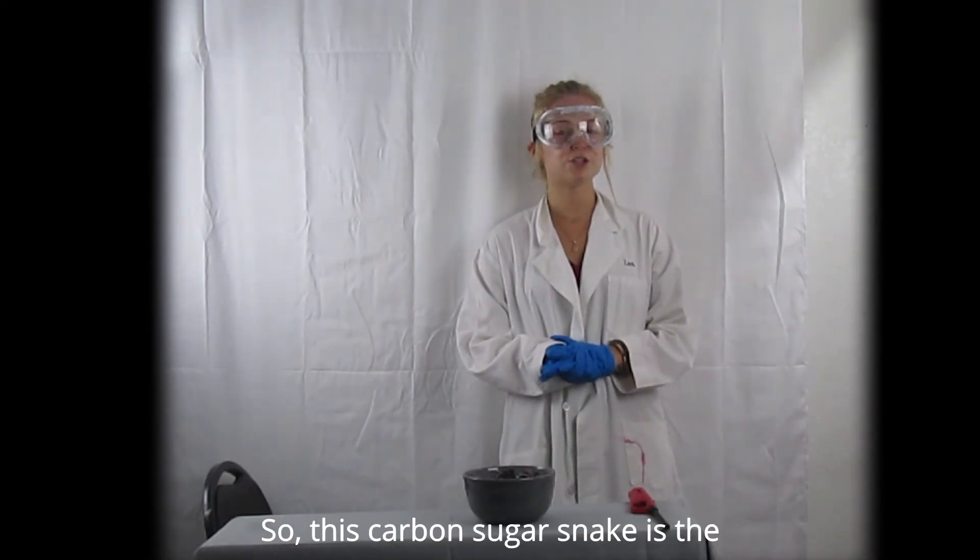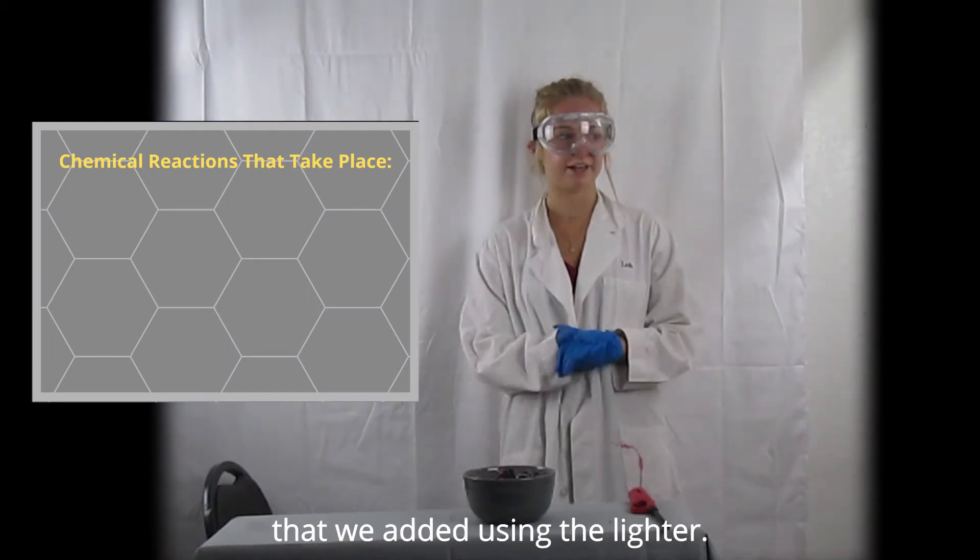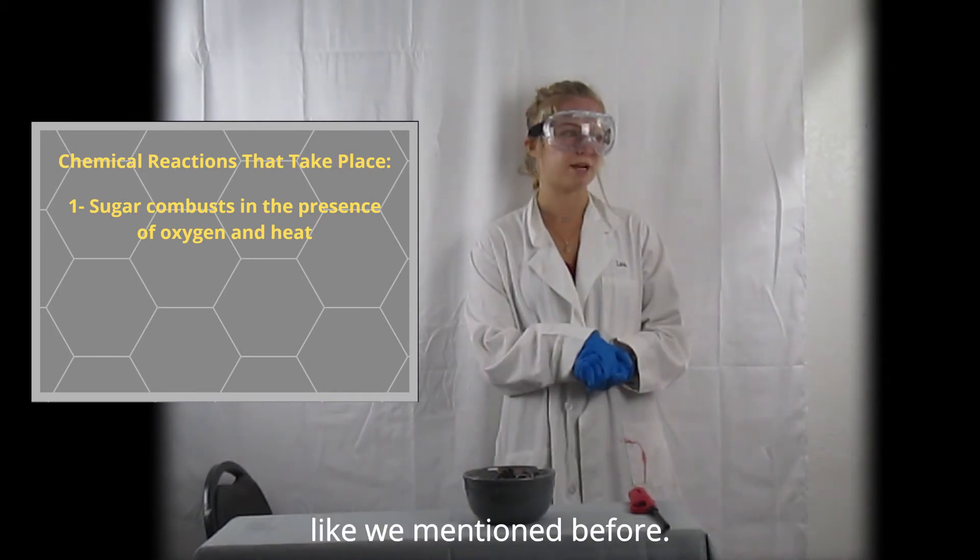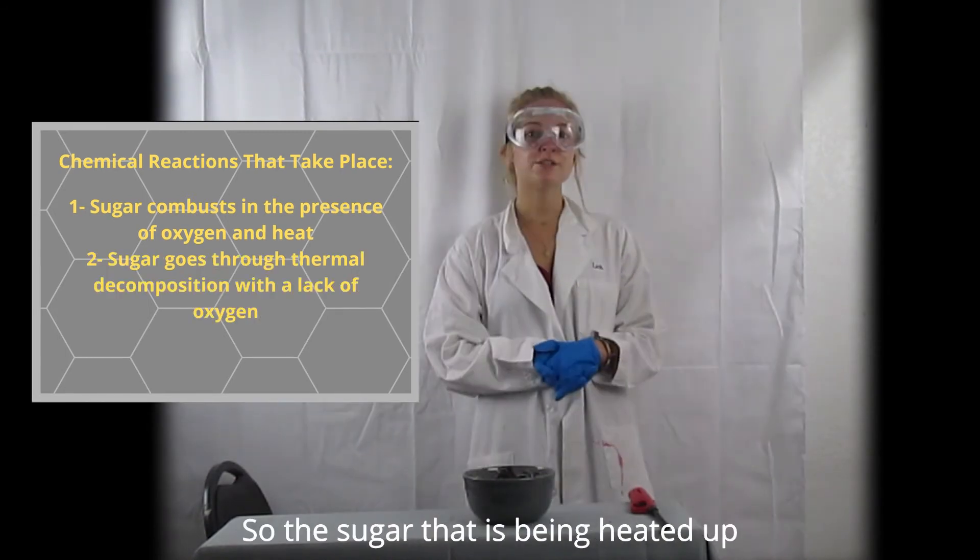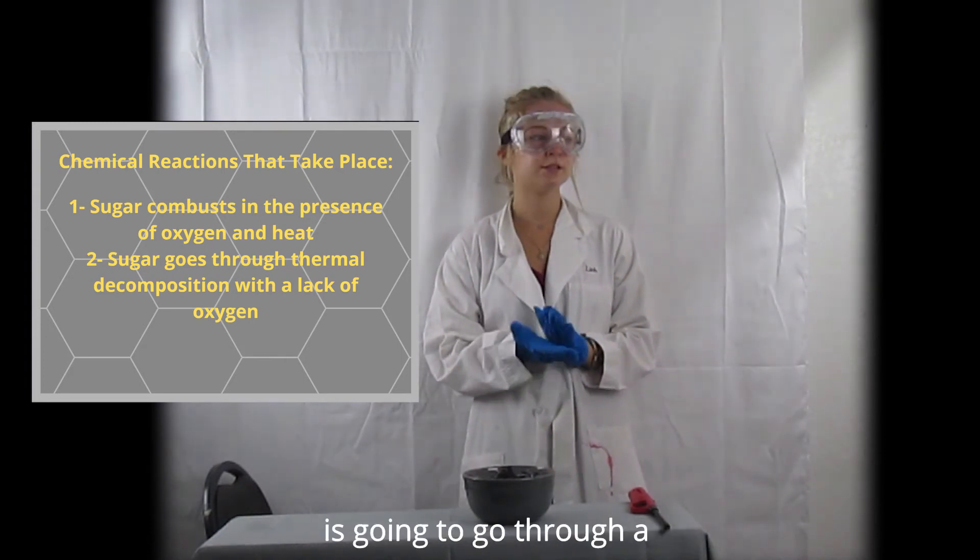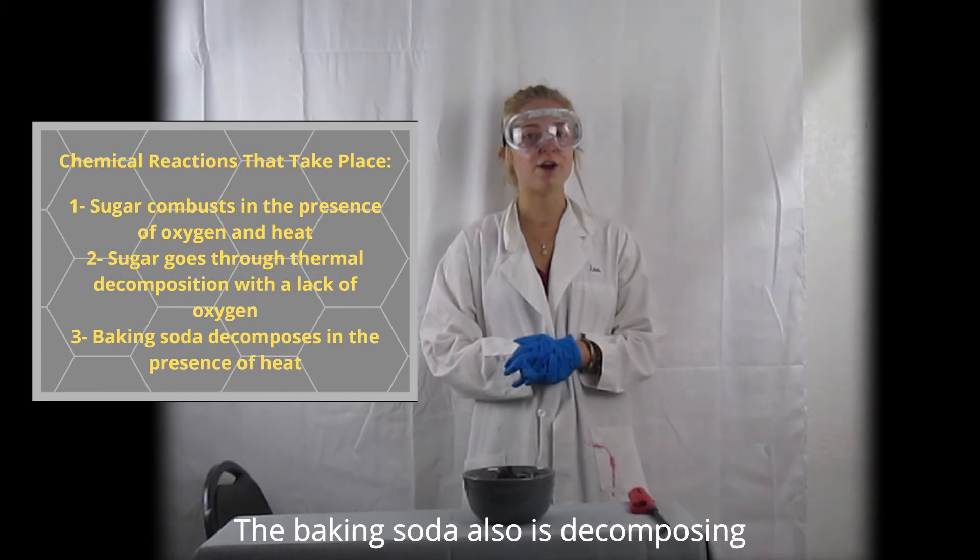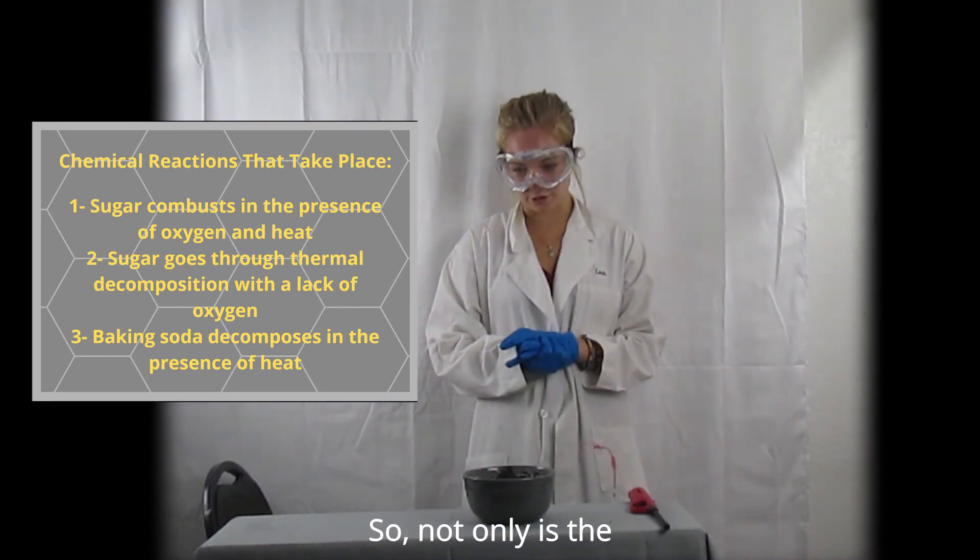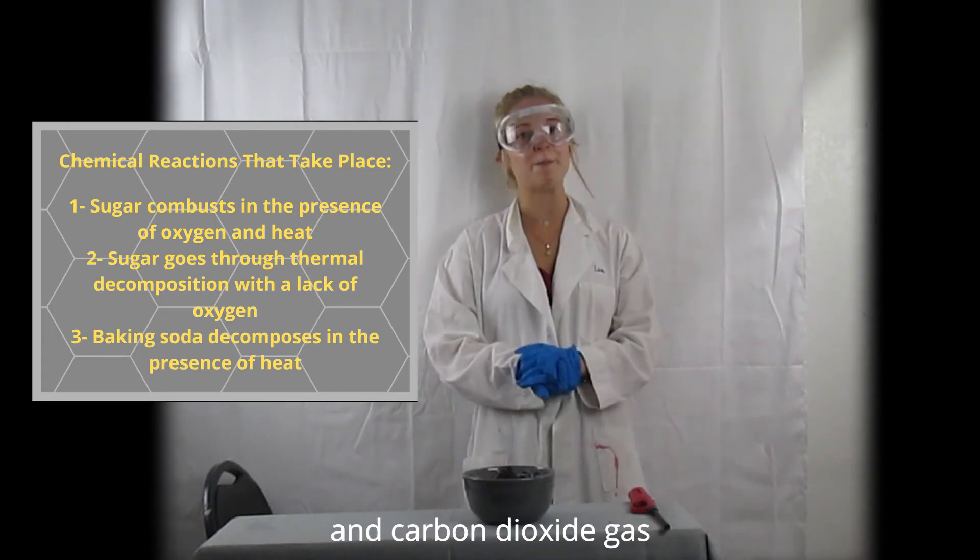This carbon sugar snake is the product of three chemical reactions that all depend on the heat that we added using the lighter. When sugar combusts in the presence of oxygen it creates carbon dioxide and water vapor like we mentioned before, and the pressure within the reaction causes the carbonate to grow and expand. The sugar that is being heated up but doesn't have access to any oxygen is going to go through a thermal decomposition, which explains why there is black substance within the experiment. The baking soda also is decomposing in the heat and produces solid sodium carbonate, carbon dioxide gas, and water vapor.